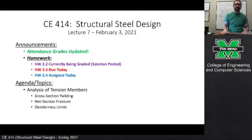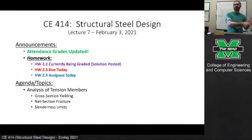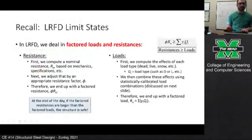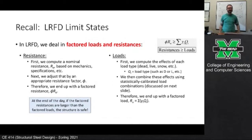We start with steel analysis — analyzing a member where we have a member, a series of loads, and we know everything about it: the connection layout, what member it is. We're assessing whether or not it performs adequately. Then the next thing is steel design: we have loads but don't know what the member looks like, so we select a member to safely resist those loads. Also, the solution to homework 2.2 has been posted and is currently being graded.